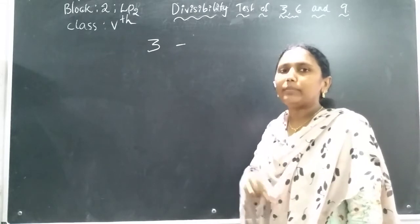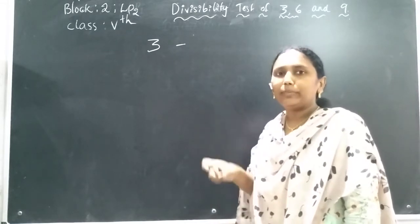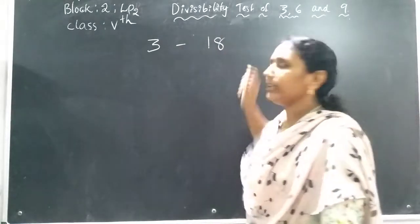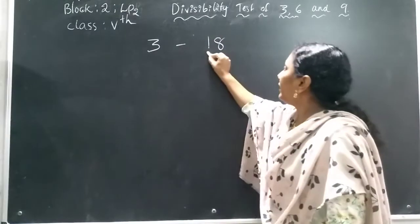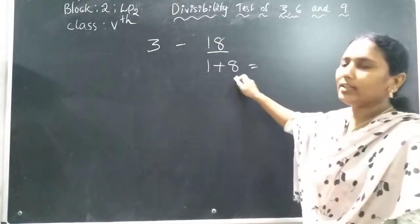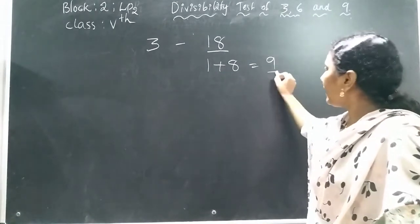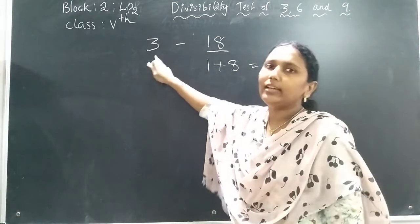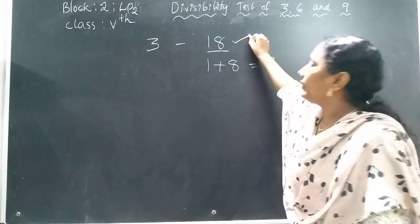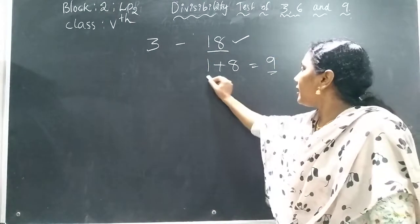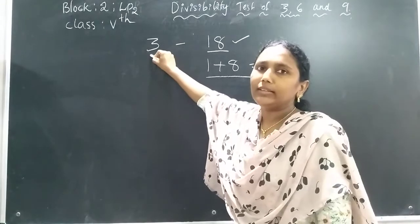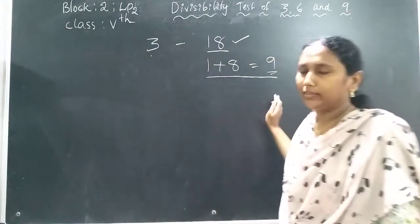The sum of the digits must be in the table of 3, and then that number is divisible by 3. For example, take the number 18. When we add: 1 plus 8 equals 9. Is 9 in the 3 times table? Yes — 3 times 3 is 9. So we can say directly that 18 is divisible by 3.